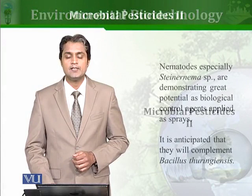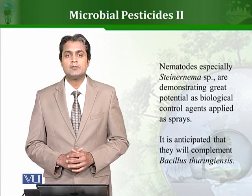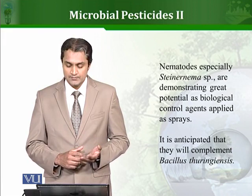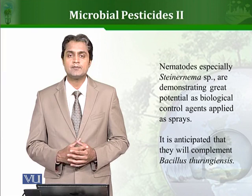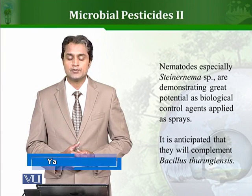Let's talk more about microbial pesticides. These are pesticides which are composed of microbial cells or their products. We talked about Bt toxin by Bacillus thuringiensis, but there are so many other microbes as well which can serve this purpose. For example, there are so many different nematodes which can kill different types of insects and pests, and those can also be used as a spray, and their products can also be used for this purpose.